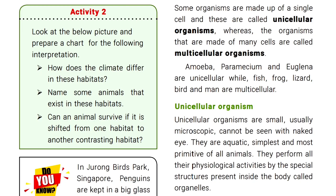Examples of unicellular organisms include Amoeba, Paramecium, and Euglena. Unicellular organisms are small, usually microscopic, and cannot be seen with the naked eye.